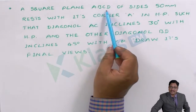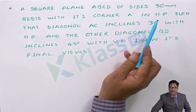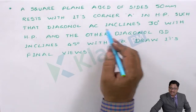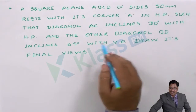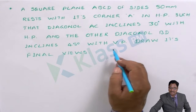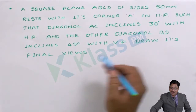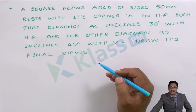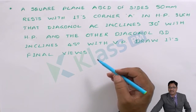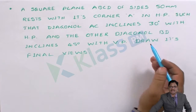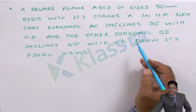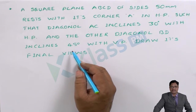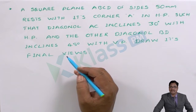A square plane ABCD of sides 50mm rests with its corner A in HP such that diagonal AC inclines 30 degrees with HP and the other diagonal BD inclines 45 degrees with VP. Draw its final views — the front view and top view — satisfying all these conditions. The problem is given inclined to both the planes.